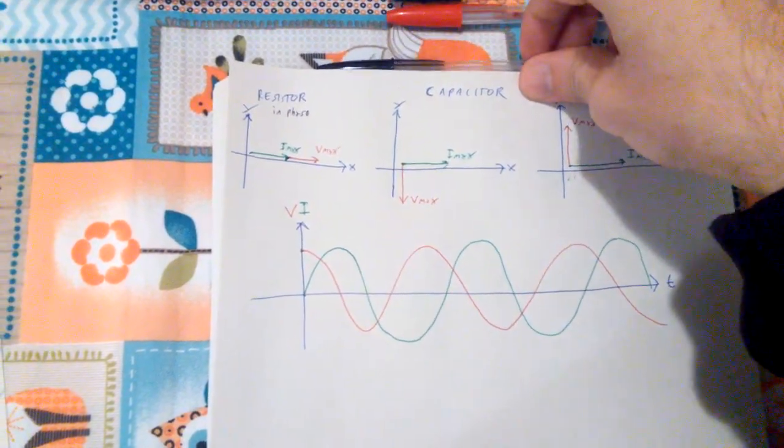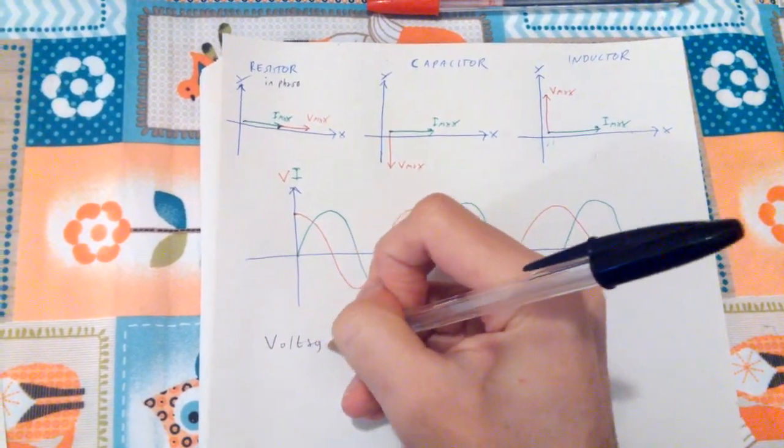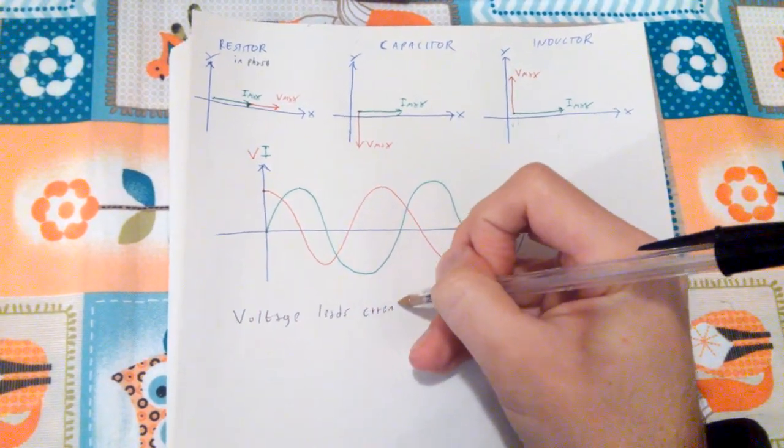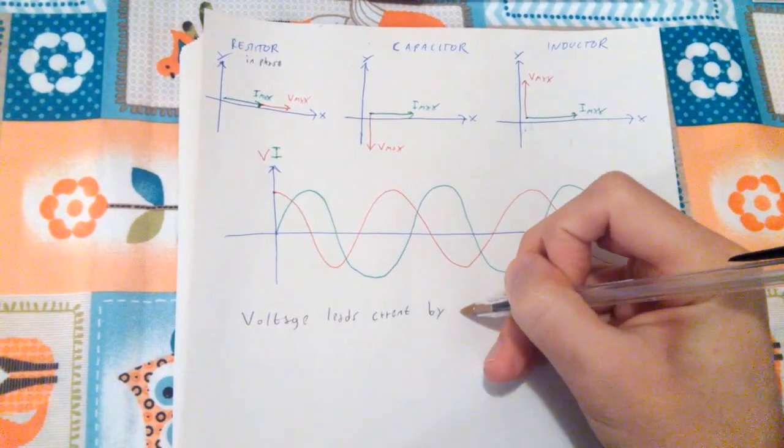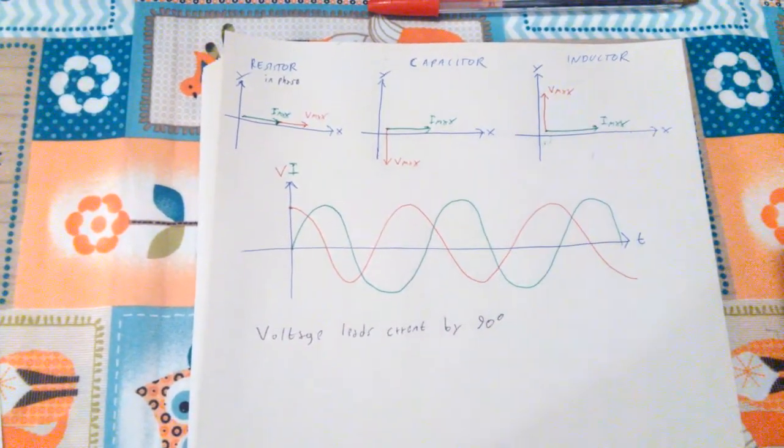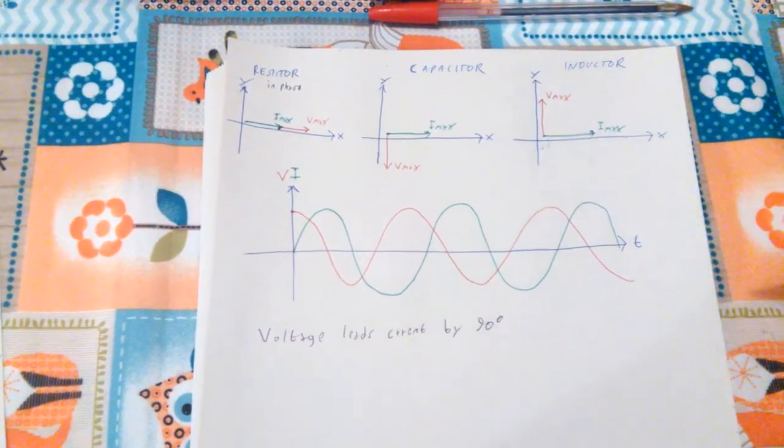And in this case, we have that voltage leads current by 90 degree. It would be the opposite with the color switched if it was current that was going to lead voltage by 90 degree.